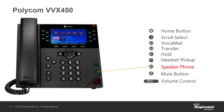Speakerphone works very similarly — if you're on a call, you can press that button to switch to speakerphone, or press it to answer a call on speakerphone. It will also hang up the call if you press it again while on speakerphone. If you're on speakerphone and want to switch to the handset, just pick up the handset. Vice versa — if you're on the handset and want to switch to speakerphone, just press the speakerphone button and you can hang up the handset.